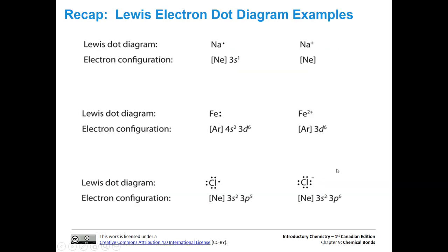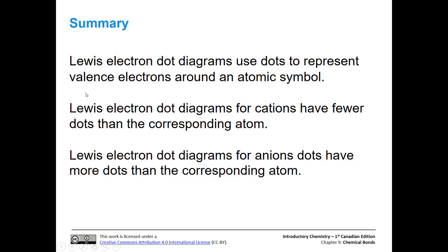In summary, we use electron dot diagrams to represent valence electrons around an atomic symbol, with each electron represented by a dot. When drawing an electron dot diagram for cations, we have fewer dots than the corresponding atom, because electrons are removed, leaving a positively charged cation. When drawing an electron dot diagram for anions, we have more dots than the corresponding atom, representing the electrons that have been added.